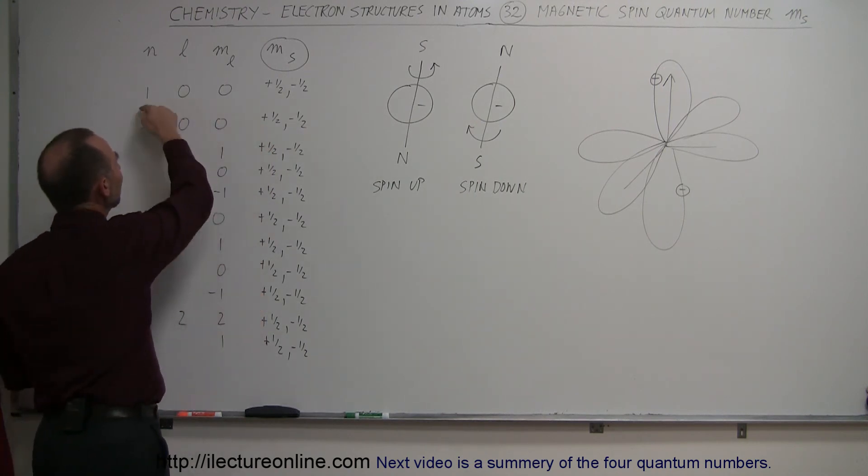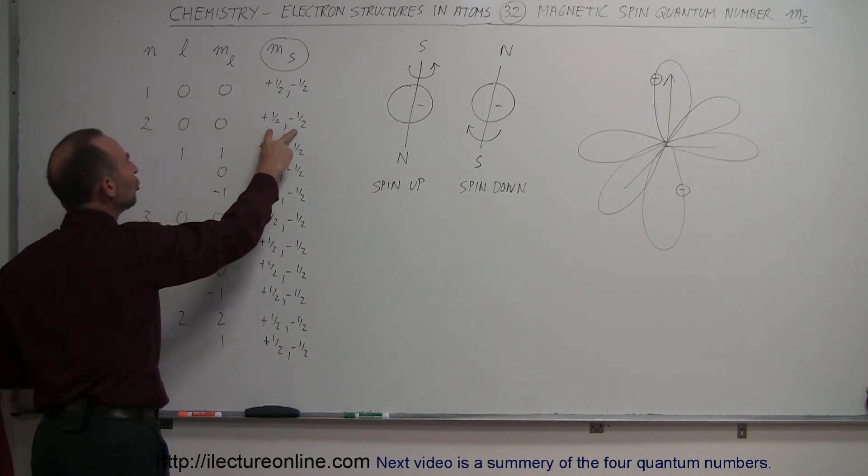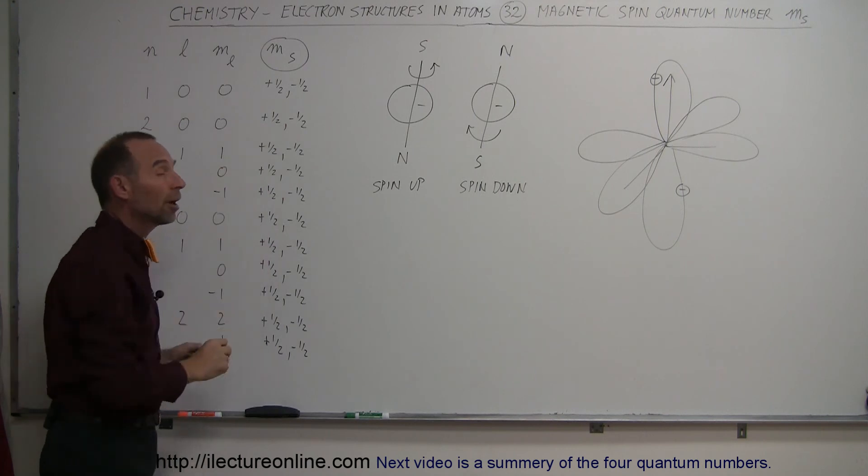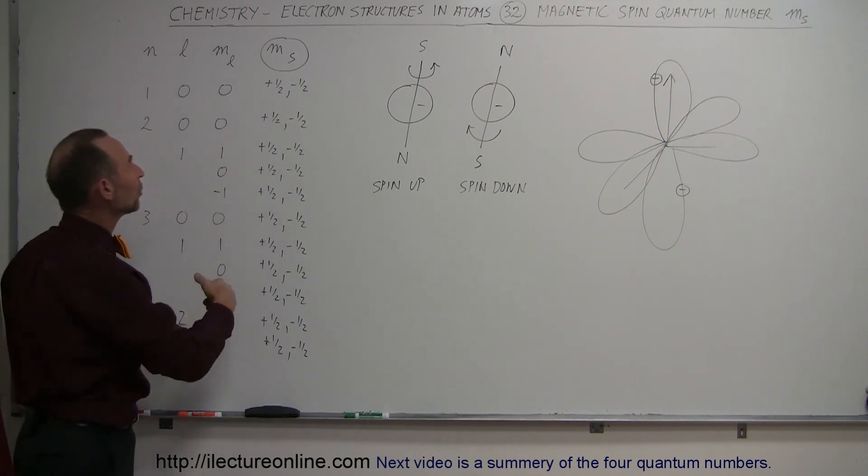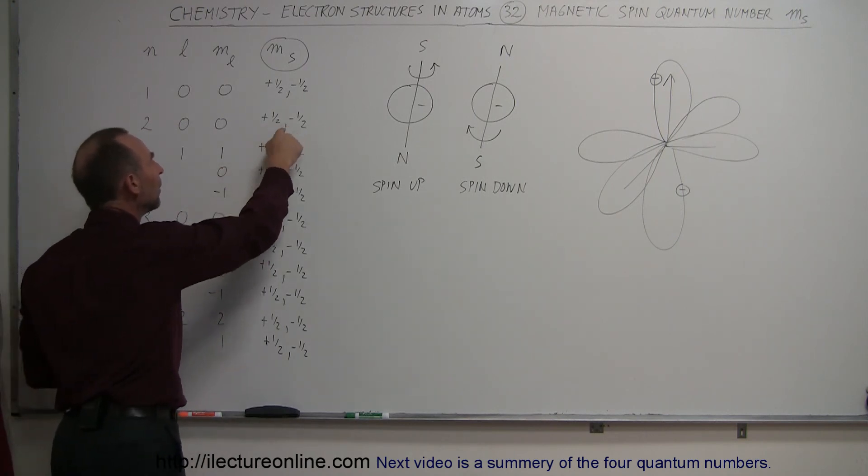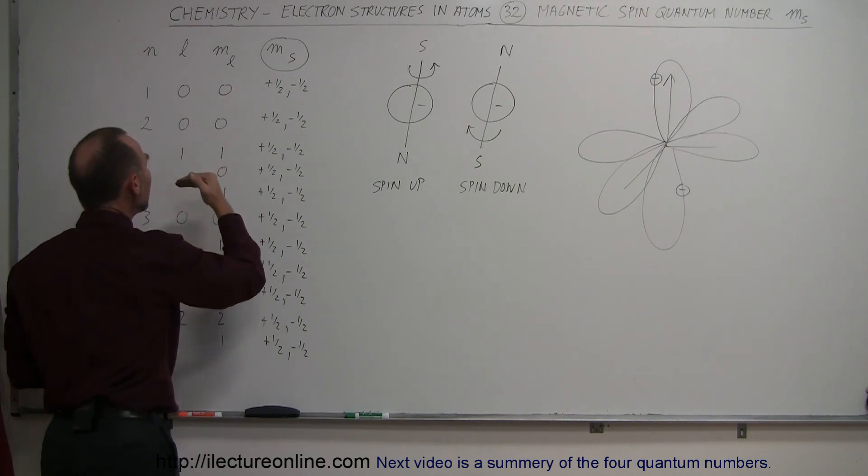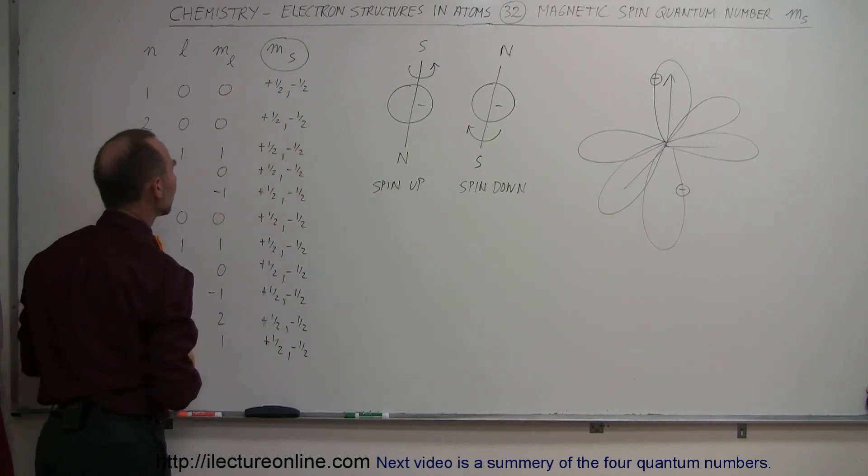Notice that for each combination of the three quantum numbers n, l, and m sub l, we have two possible situations for the electron: spin up or spin down, which we indicate as plus one-half and minus one-half. For each combination of quantum numbers here, there will always be two electrons.